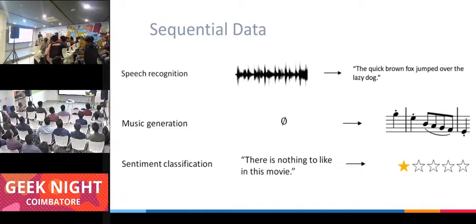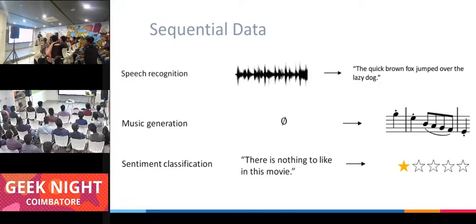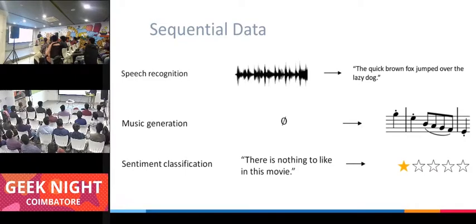In speech recognition, you give a waveform or audio sample and you need to get text out of it. You could do it using a convolutional neural network, but that would mean training a model for each word — if you have 10,000 words, you'd need 10,000 categories. That would become cumbersome. That is where we use RNN, which is able to look at the sequence and get information from it.